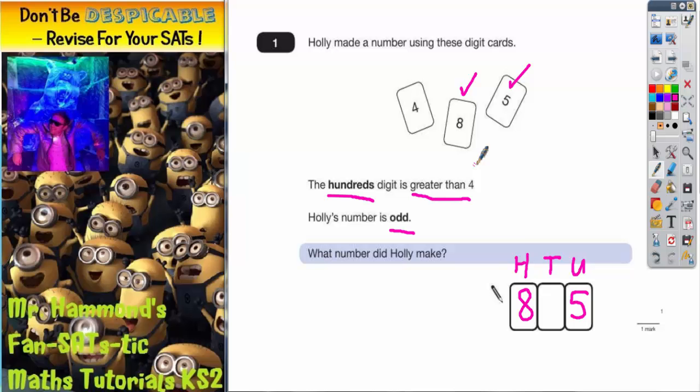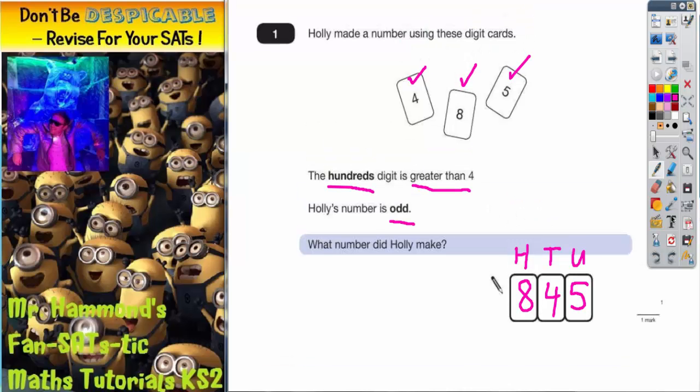And obviously the tens column, there's only one digit left and that's going to be the four. So the tens column has got to be four. So what number did Holly make? It has to be 845.